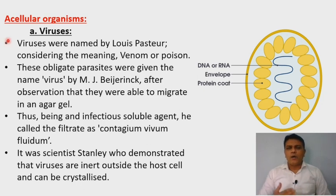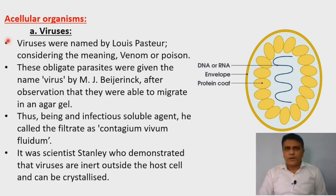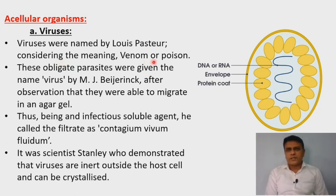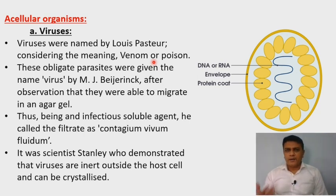Viruses — you are all familiar with different types of viruses. At present, we are facing the situation of a pandemic due to the virus COVID-19. These viruses are highly poisonous, and hence viruses were named by Louis Pasteur considering the meaning 'venom or poison.' These viruses are poisonous — they cause diseases in living organisms, and sometimes due to this disease, the plant or organism may even die. Hence they are termed as venomous or poisonous in nature.